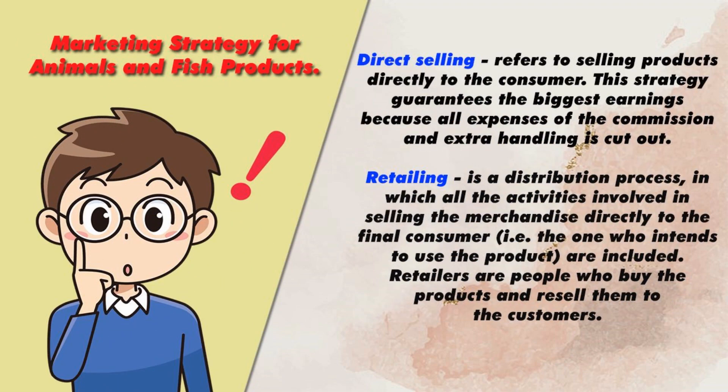Marketing strategy for animals and fish products. Selling refers to selling products directly to the consumer. This strategy guarantees the biggest earnings because all expenses of commission and extra handling are cut out. Retailing is a distribution process in which all activities involved in selling the merchandise directly to the final consumer — those who intend to use the product — are included. Retailers are people who buy the products and resell them to the customers.